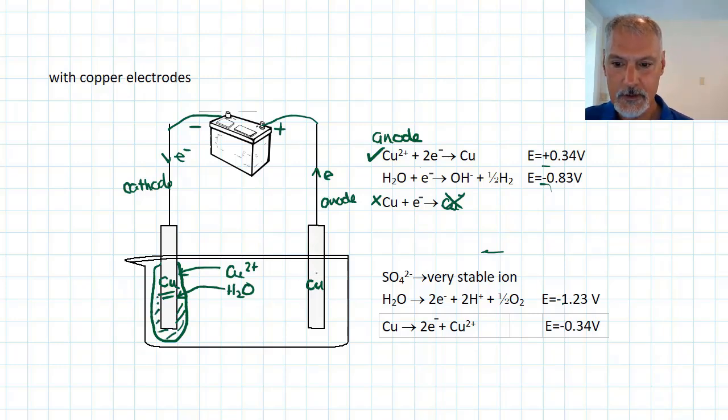Over at this electrode, again I have the sulfate ion. And as before, it's very stable and not likely to give electrons. Our water molecule could give away electrons, and that's indeed what happened in our last example. But we also have now copper.